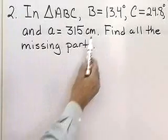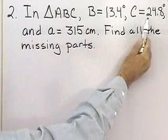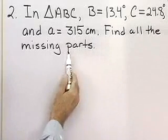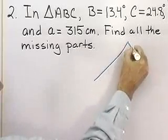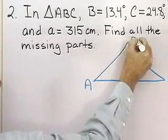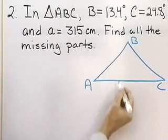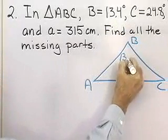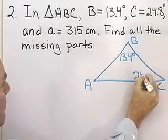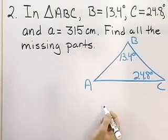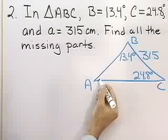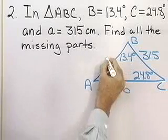Let's look at another problem. We have triangle ABC with angle B equal to 13.4 degrees, angle C equal to 24.8 degrees, and side A equal to 315 centimeters. We want to find all the missing parts. Again, I'm going to draw a triangle here for reference — it doesn't have to be accurate. I'll label it A, B, and C. Angle B is 13.4 degrees, angle C is 24.8 degrees, and side A is 315 centimeters. I need to find angle A, side B, and side C.